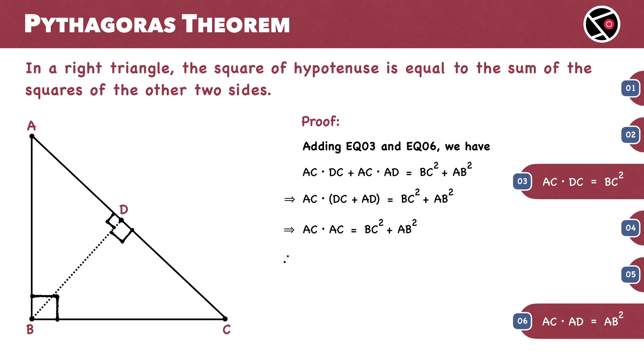So we have AC times AC equals BC squared plus AB squared. Rearranging terms, we get AC squared equals AB squared plus BC squared. And with that, we have proven that in a right-angled triangle, the square of the hypotenuse is equal to the sum of the squares of the other two sides.